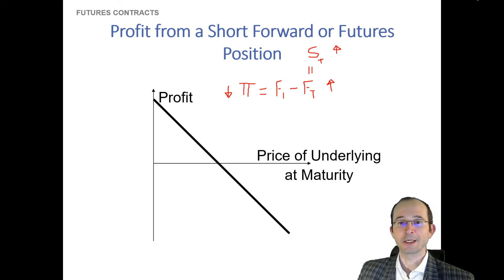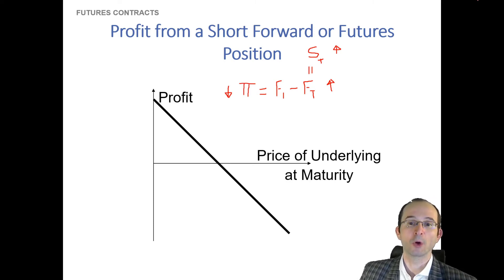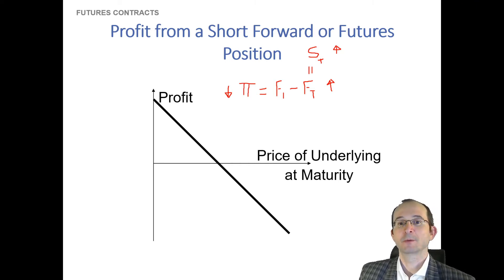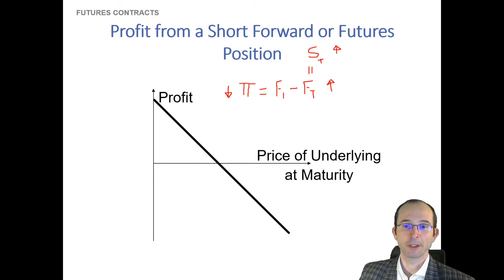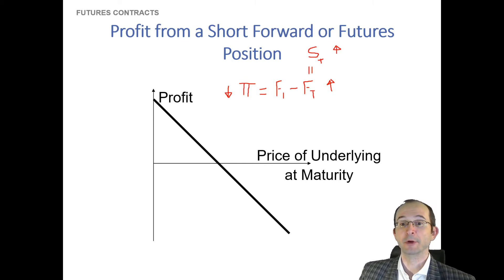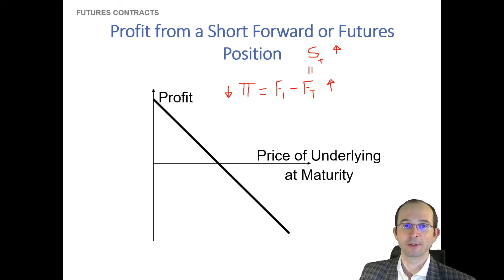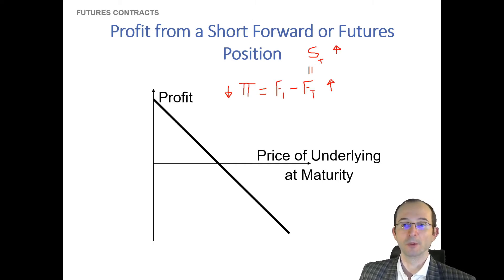And analogously, if the price of the underlying asset were to fall at maturity, that means that the futures price at maturity would fall, which means that the profit to the short position would actually rise. Of course, the two are mirror opposites of each other, and as you have heard many times, derivatives being a zero-sum game, it must be that the profit to the short side and the profit to the long side are mirror images. The loss to one is a gain to another.